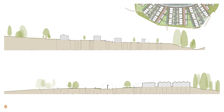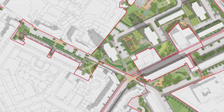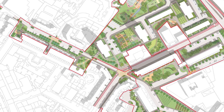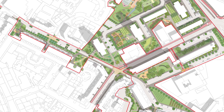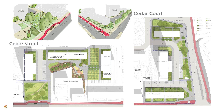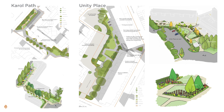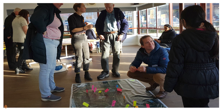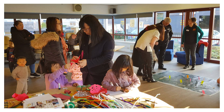Our £4 million Woodside Making Places project is all about transforming the streets, green spaces, play areas, and courtyards of the Woodside area of Glasgow, creating an attractive, multifunctional green infrastructure network with a strong sense of place. The project integrates walking and cycling routes, biodiverse habitats, sustainable rainwater drainage, vibrant doorstep play, and edible landscapes, and the design is being heavily informed by engagement with the local community.